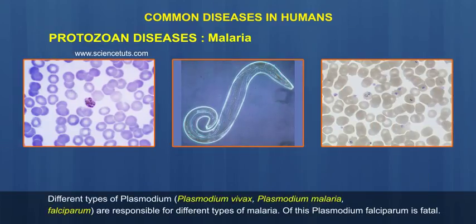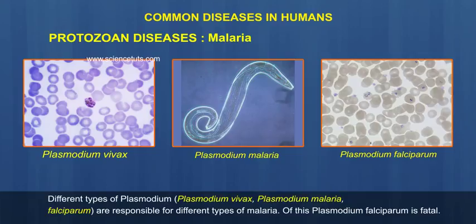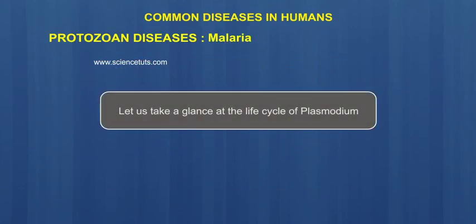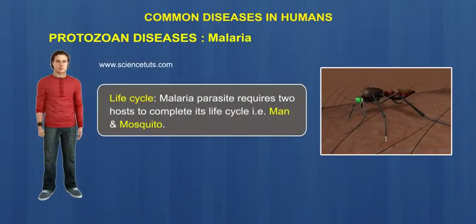Different types of Plasmodium — Plasmodium vivax, Plasmodium malaria, and Plasmodium falciparum — are responsible for different types of malaria. Of these, Plasmodium falciparum is fatal.